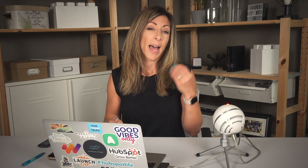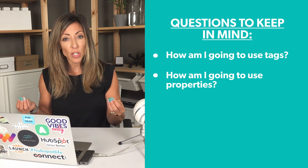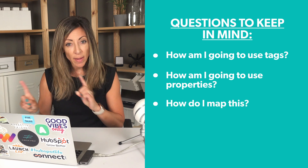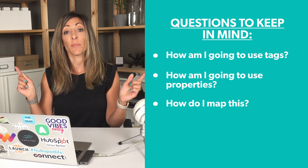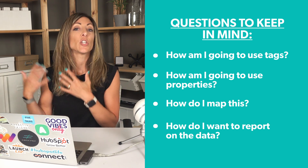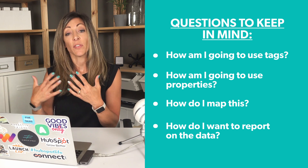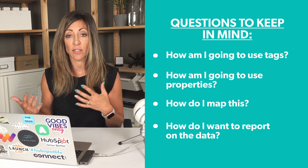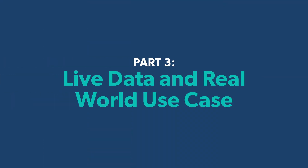To make the HubSpot integration really work well, you have to think through your strategy: How am I going to use tags? How am I going to use properties in HubSpot? How do I make sure that information gets ported over appropriately, and how do I want to report on that? If you're using contact properties to bring a tag over, you might want to use that contact property to drive list membership, which is what you'd use for reporting.